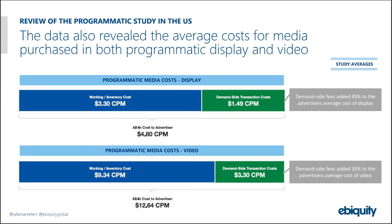Going back to the point around mobile and video specifically, from our study you can see the averages for fees or taxes associated with traditional display versus video. Video is a medium that continues to be heavily invested in and is continuing to grow alongside mobile. While the percentage fee is slightly less for video compared to display, because the CPM for video is so much higher, these advertisers were being taxed quite heavily — on average $3.30 per impression for video placements.